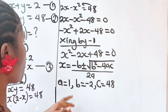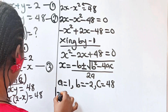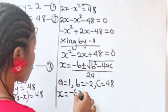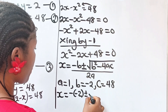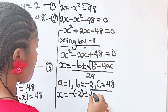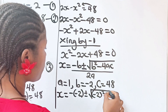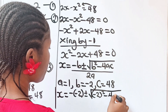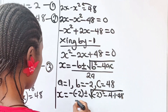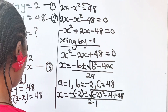Substituting into the quadratic formula, we get x equals minus minus 2 plus or minus the square root of minus 2 squared minus 4 multiplied by 1 multiplied by 48, all divided by 2 multiplied by 1.